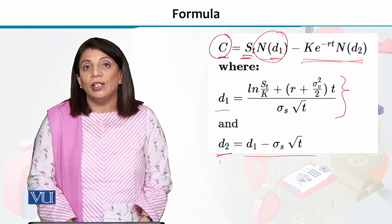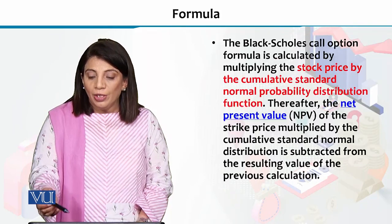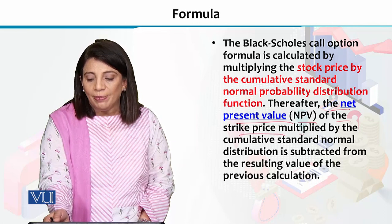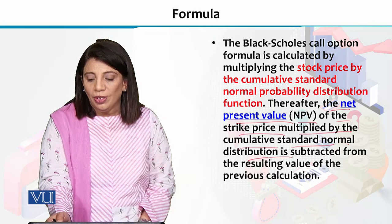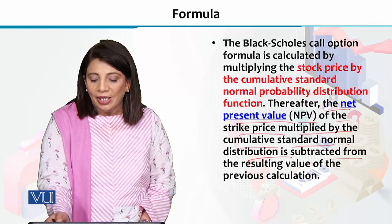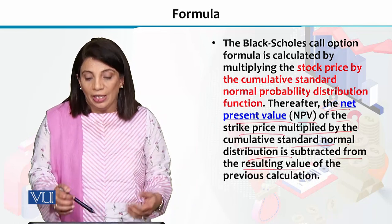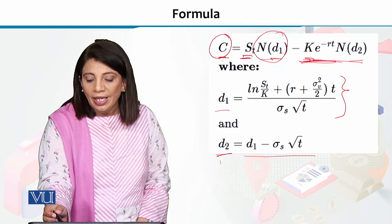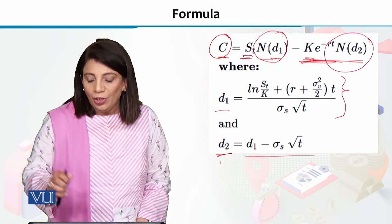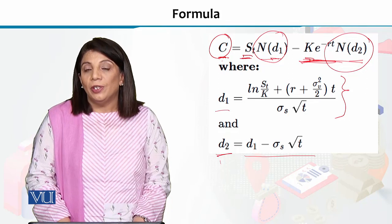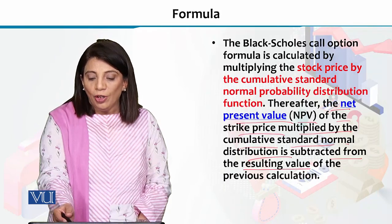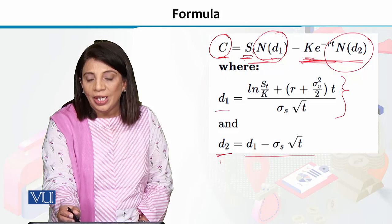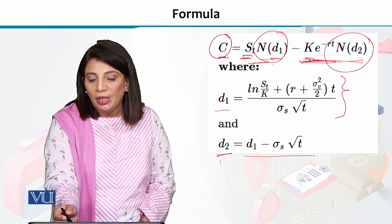We have assumed that returns will be following the log-normal distribution. Next, we calculate the net present value and the strike price multiplied by the cumulative standard normal probability distribution.